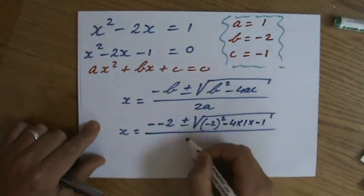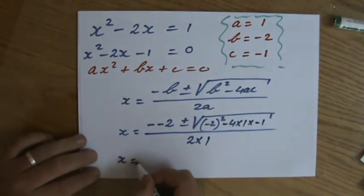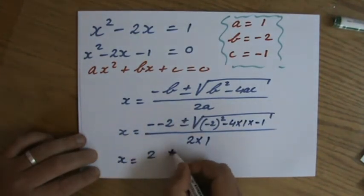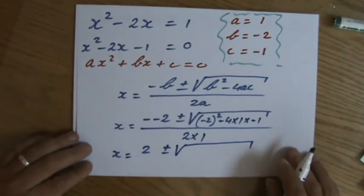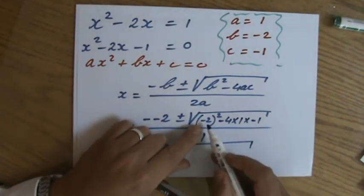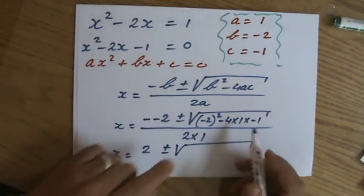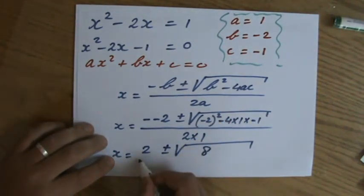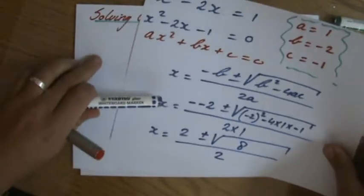All right, minus four times a times c, and all of that divided by two times a, two times one. All right, x equals, that is two, then, and minus minus two, plus or minus. I hope you can still follow me. It's getting a little bit messy. Sorry. You can do this in your calculator if you want to. That is going to be four plus four. So it's going to be eight, and all of that divided by two. So I'm going to get two answers. I'm going to write them down here.